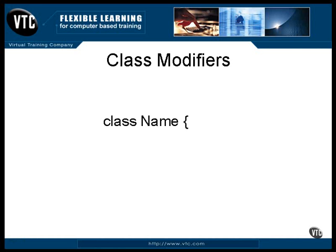You can specify that a class be publicly available. The keyword public specifies the accessibility of the class. If it's declared as public, the class is available everywhere. A public class can be loaded and instantiated by any class anywhere.